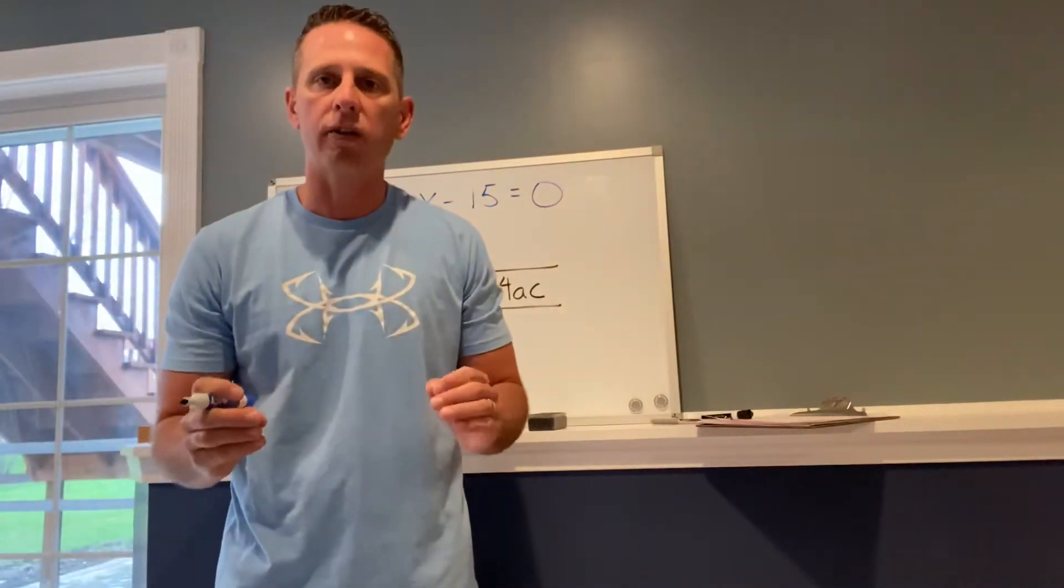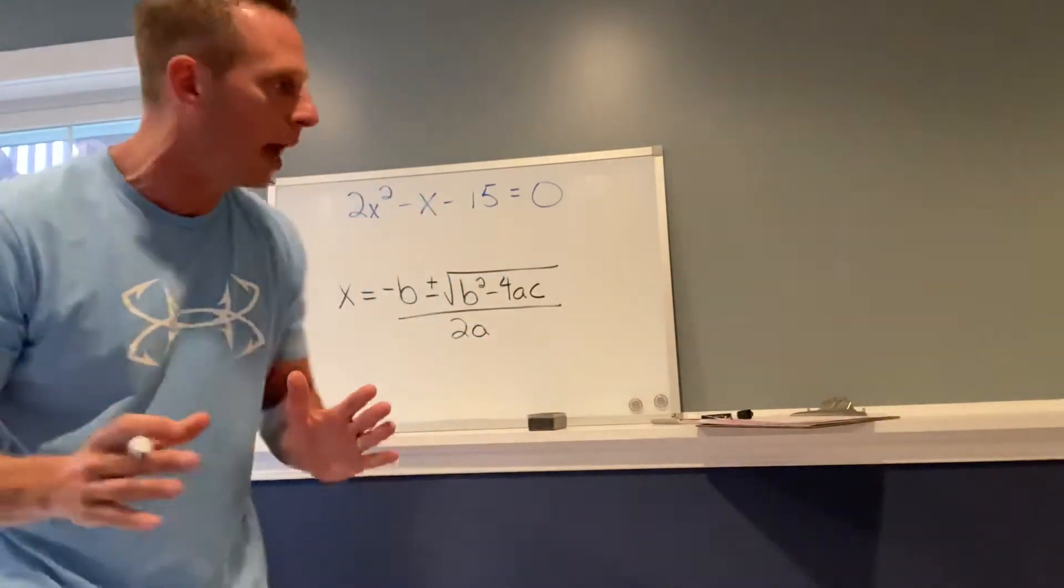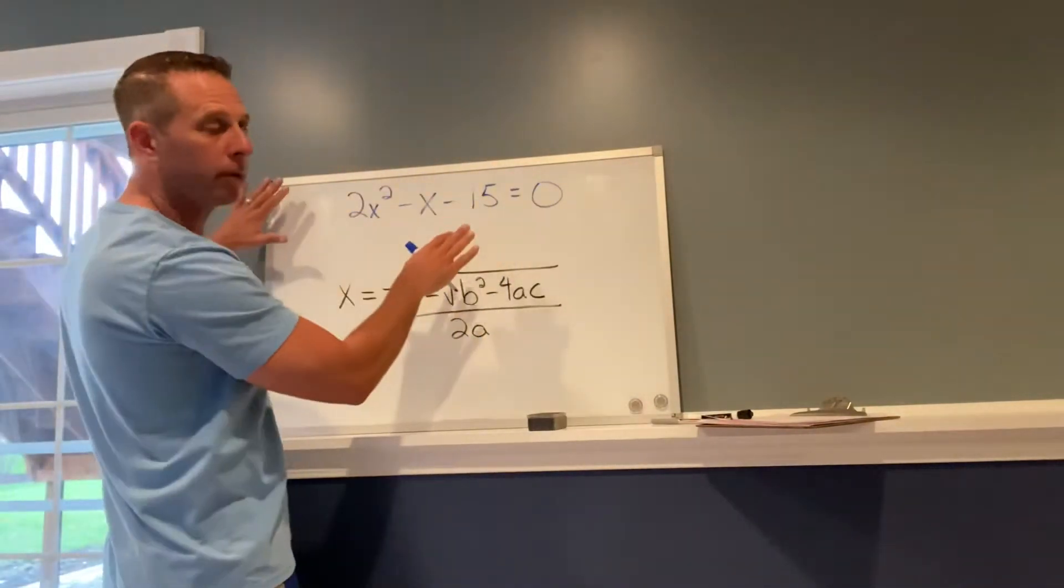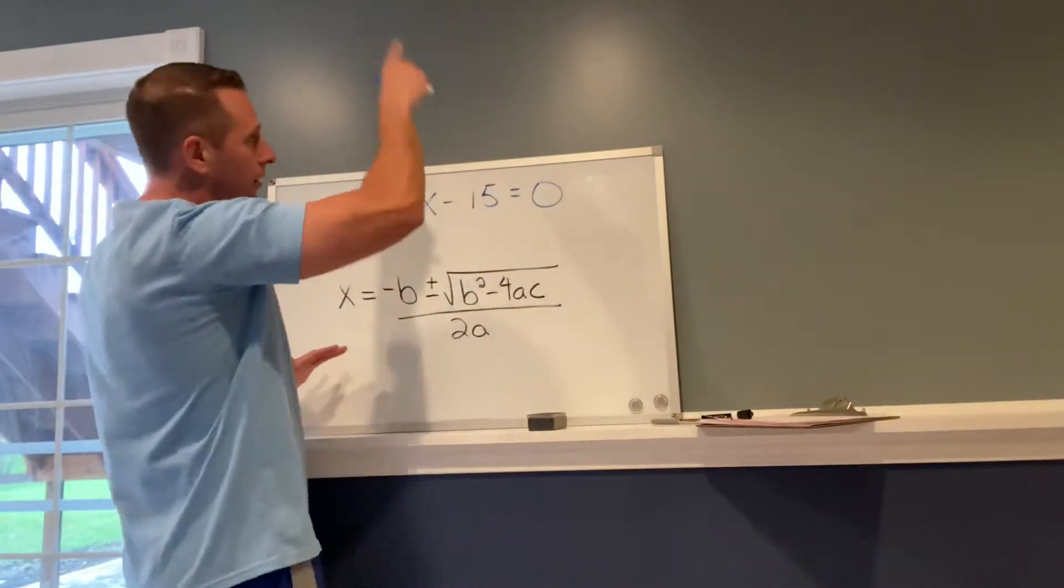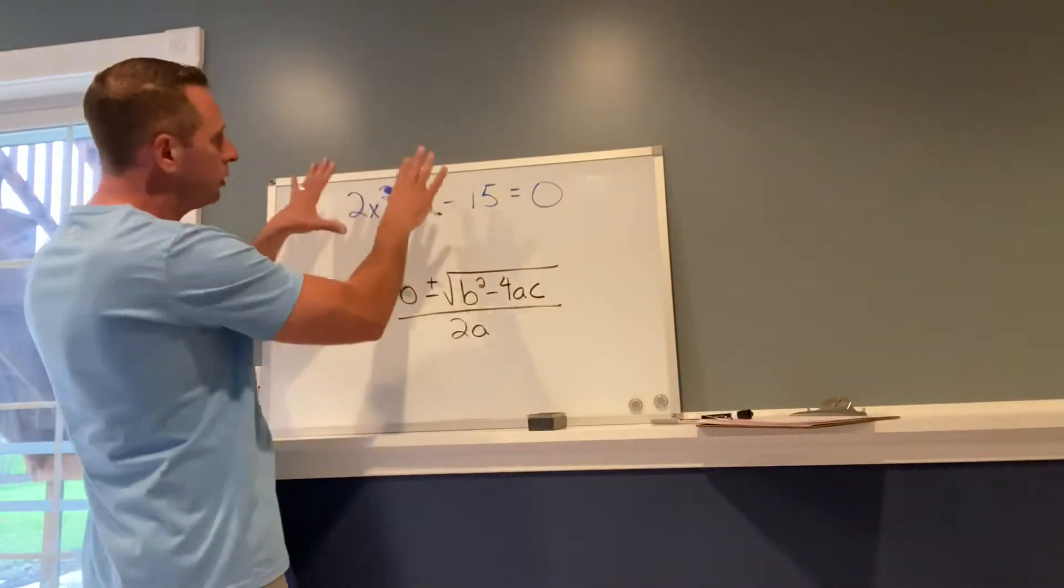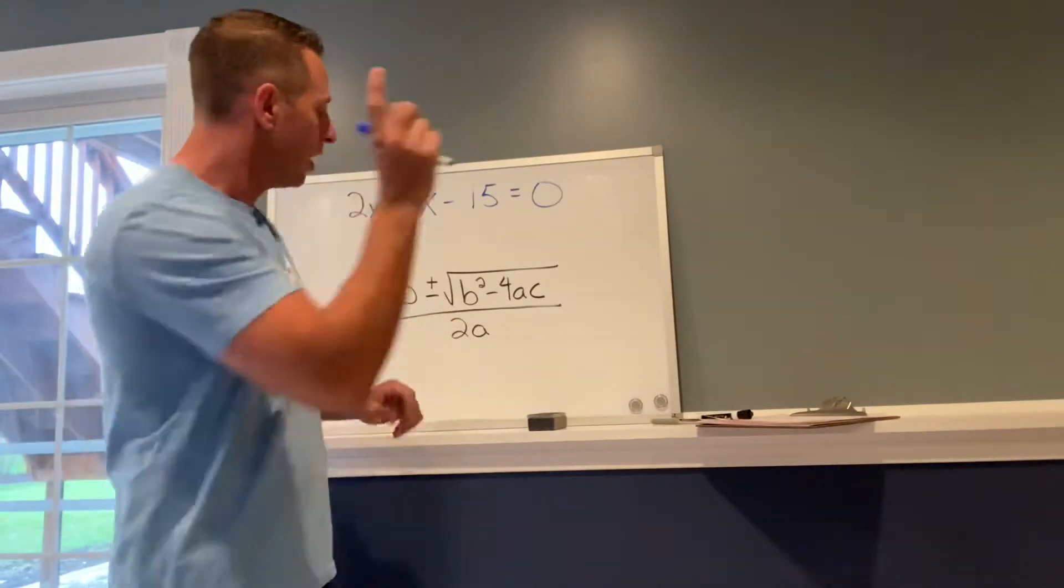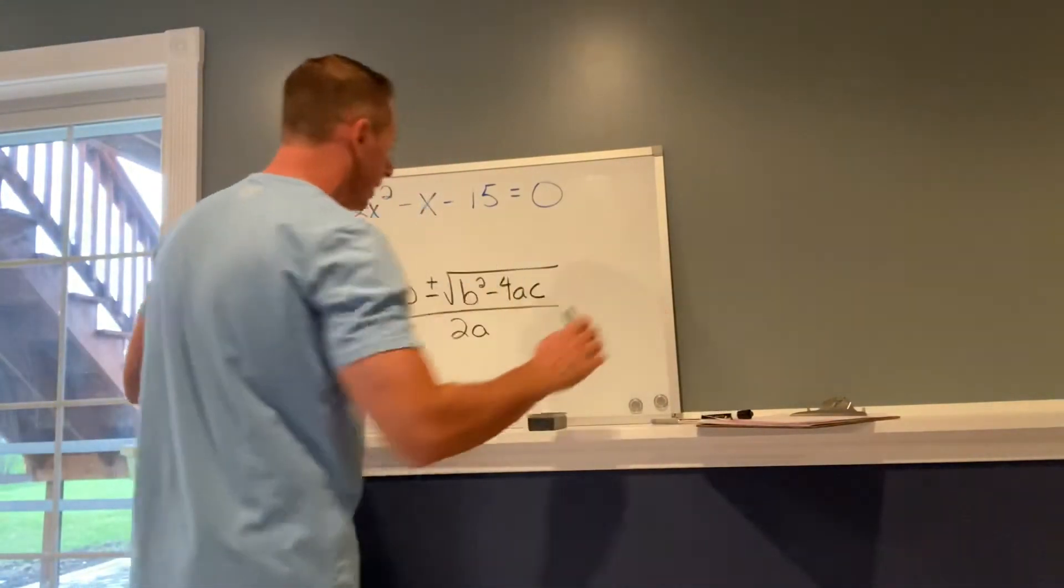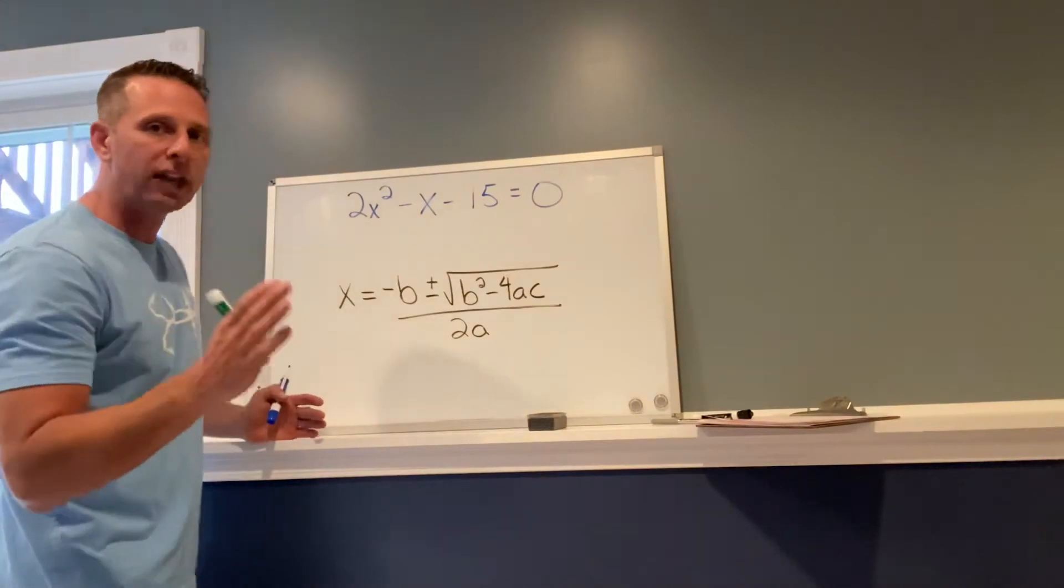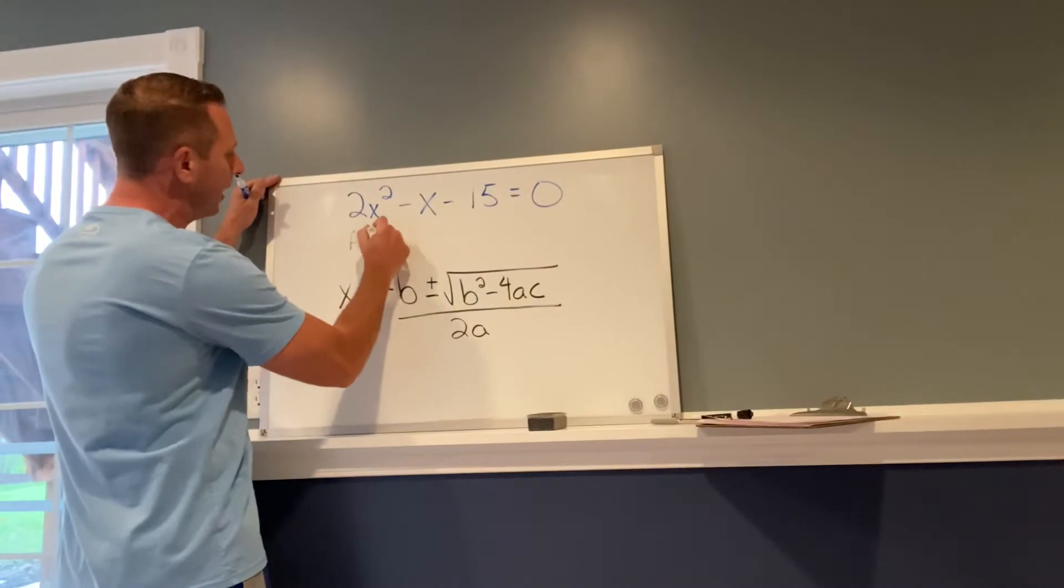What we're doing when we're solving a quadratic equation is finding the zeros, also called finding the x-intercepts. We've graphed this parabola before, we graph that parabola and see where it crosses the x-axis. By substituting these values into this equation we're finding the same thing. So the first thing we need to determine is what is a, what's b, and what's c.